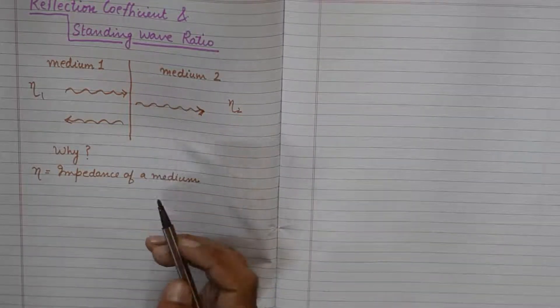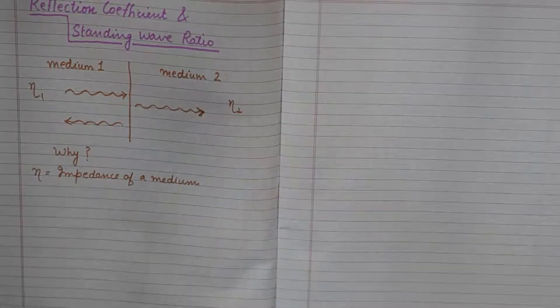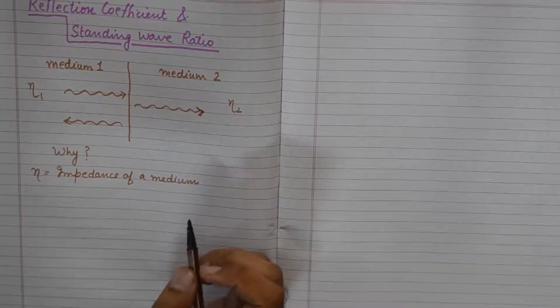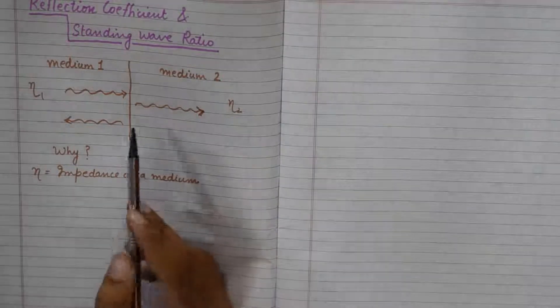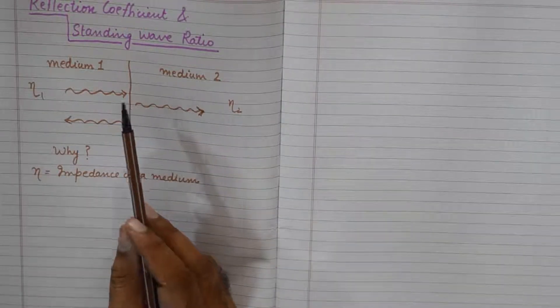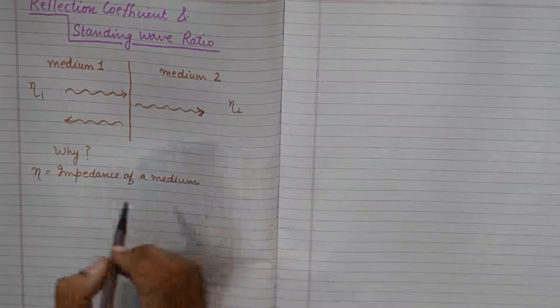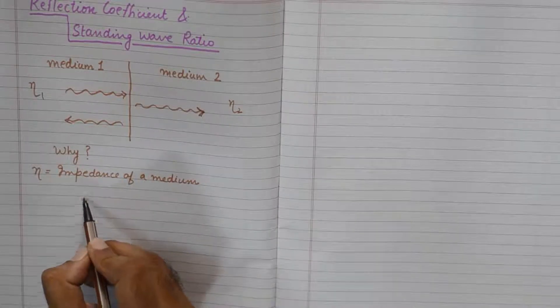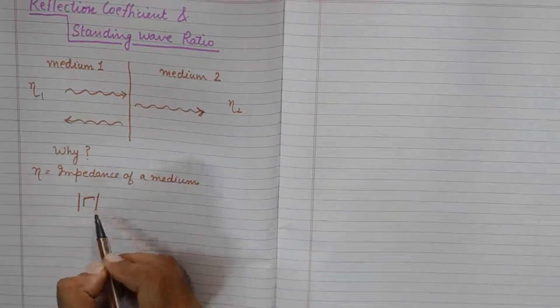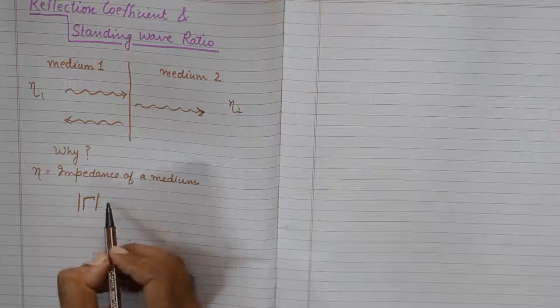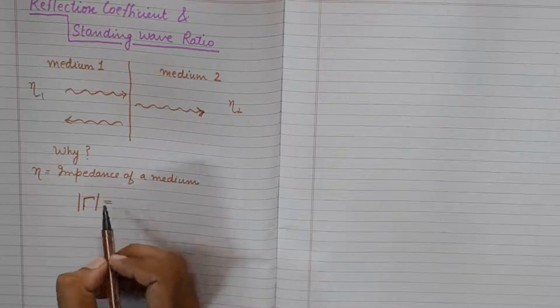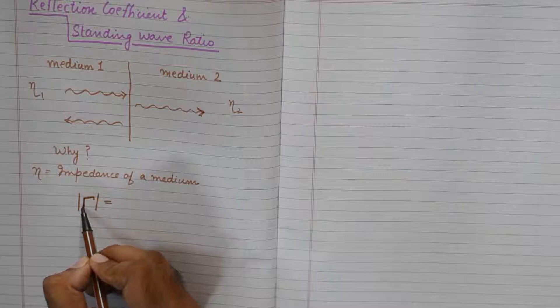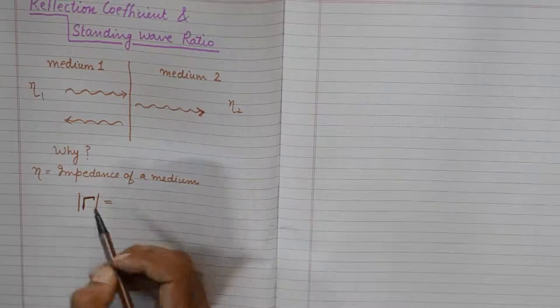And that also results in standing wave ratios. We will discuss about the formula later. Now because of this mismatch of the impedances of the medium, some part of the wave is reflected back which is given by a parameter known as reflection coefficient.